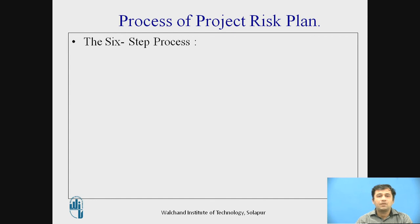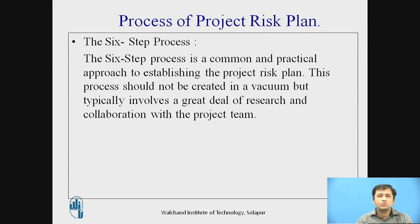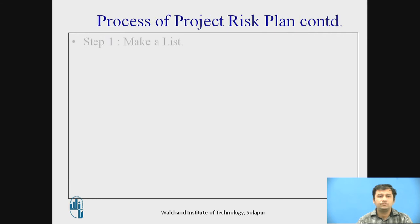There are generally six steps followed for risk planning. The six-step process is a common and practical approach to establishing the project risk plan. This process should not be created in a vacuum and typically involves a great deal of research and collaboration within the project team — including not only team members working on the project, but also stakeholders, the outside world, and vendors. The first step is to make a list of all possible risks involved and at what stage each risk is going to occur.